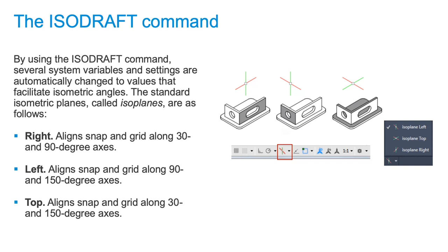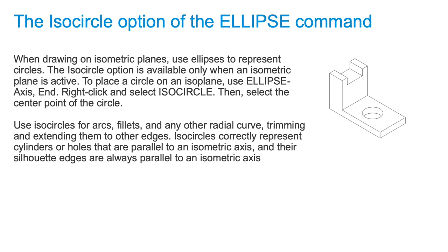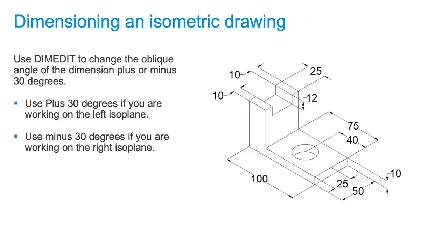Isodraft allows the user to place elements on isometric planes. You can use Ctrl-E or F5 to cycle through the isoplanes. There are three isoplanes: left, top, and right. We use the ellipse tool with the isocircle option to place circles on isoplanes. We use the oblique tool to change the oblique angle of the dimension using plus or minus 30 degrees.